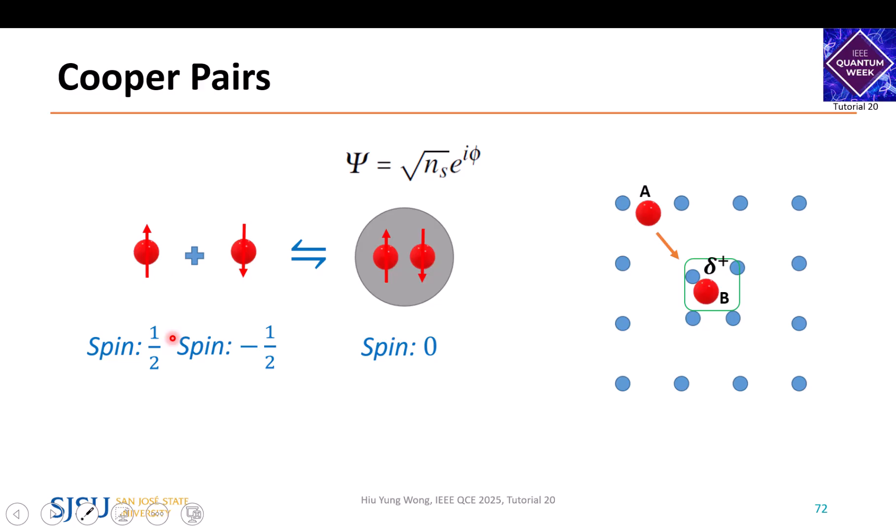When you fill up the atom, you cannot have two electrons having the same state. That's why 1s can only have two electrons—one spin up, one spin down—then you need to go to the second shell. They exclude each other. But light is different, light is something called boson.